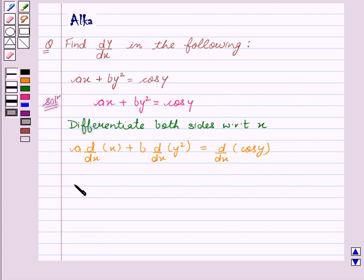So this is equal to a into d/dx of x is 1 plus b into d/dx of y squared is 2y dy/dx equal to d/dx of cos y is minus sin y into dy/dx.